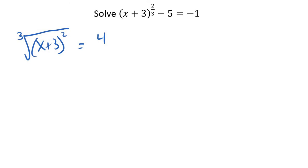Now, how are you going to get rid of a cube root? Let's cube both sides. So I'm going to cube both sides. So this is now x plus 3 squared equals 4 cubed, which is 4 times 4 times 4 is 64.